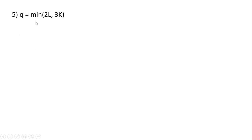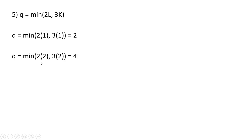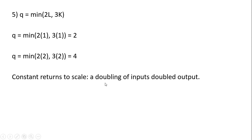Example 5 is a perfect complements production function. Picking an input mix where L is 1 and K is 1, output is the minimum of 2 times 1 or 3 times 1, so the minimum is 2 — we get 2 units of output. Let's double our inputs: output will be the minimum of 2 times 2 (which is 4) or 3 times 2 (which is 6). So 4 is the smaller number, output will be 4. We doubled our inputs and output exactly doubled — constant returns to scale.